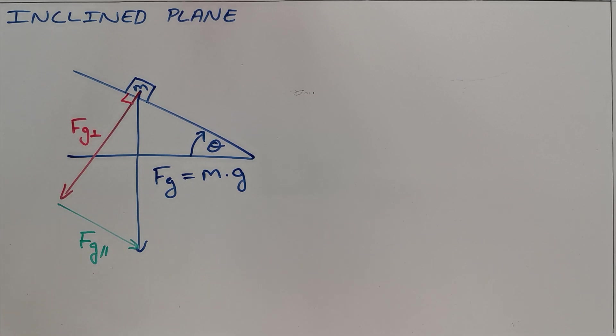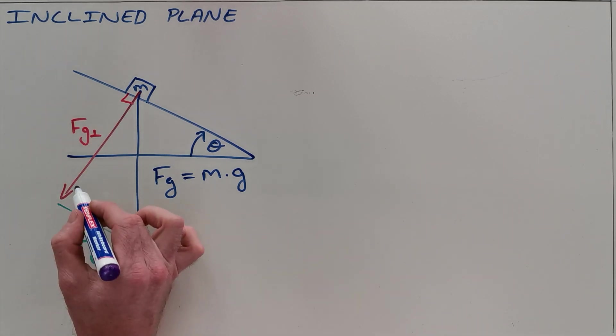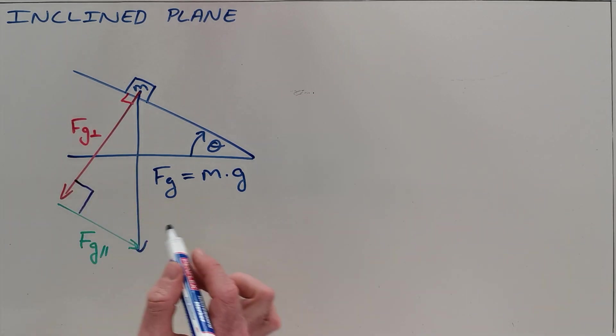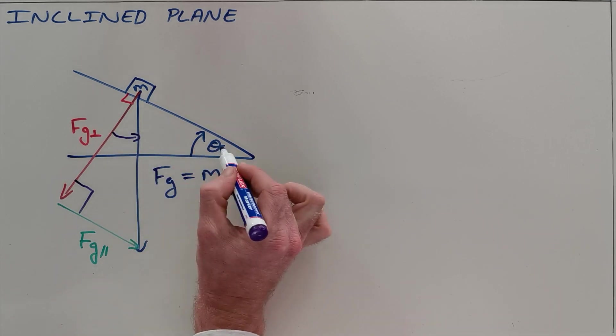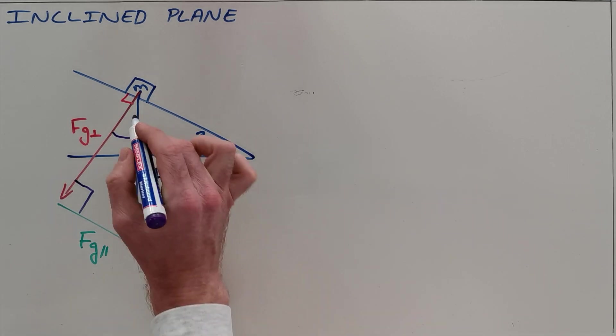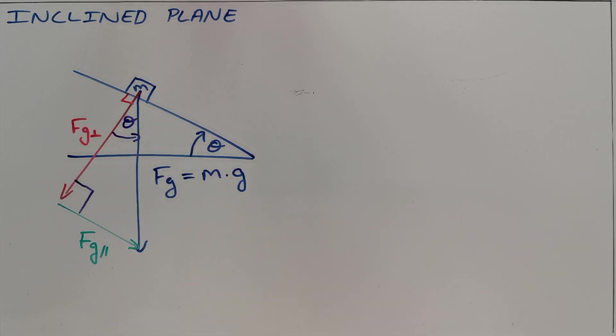What we have now done is we have created a right angle triangle. The right angle being here we can use geometry to find that this angle theta that the slope is inclined at is also equal to this angle theta over here.